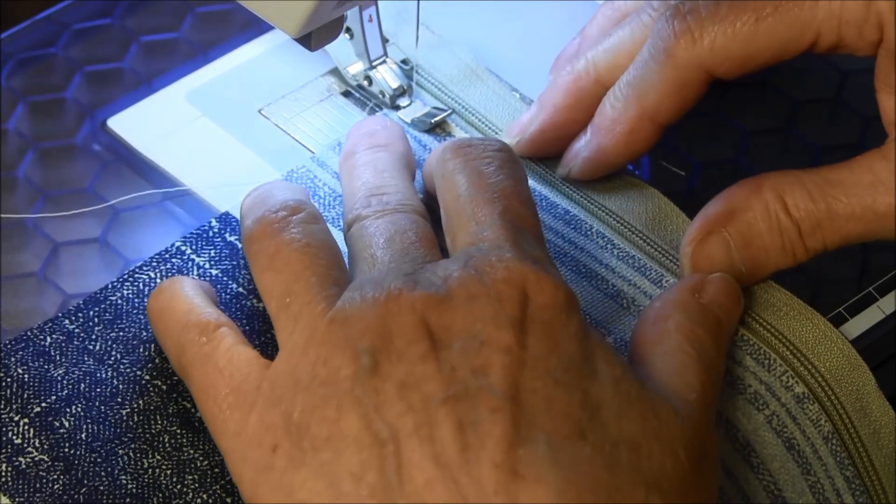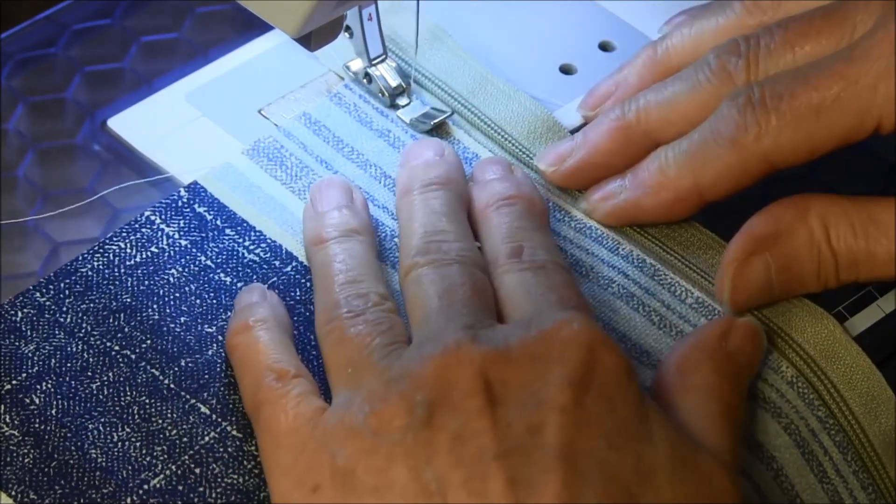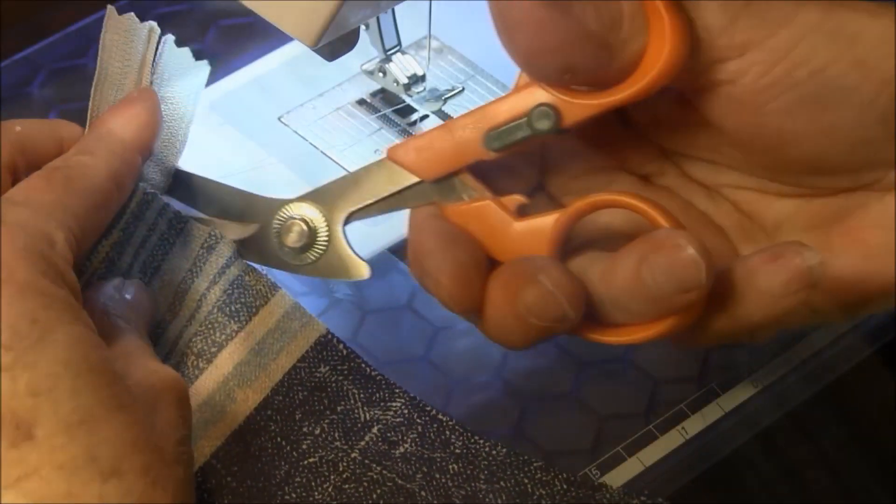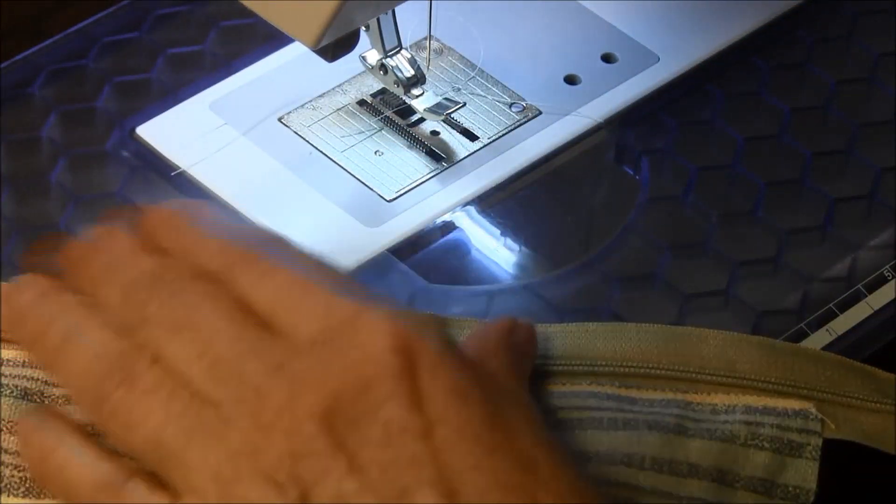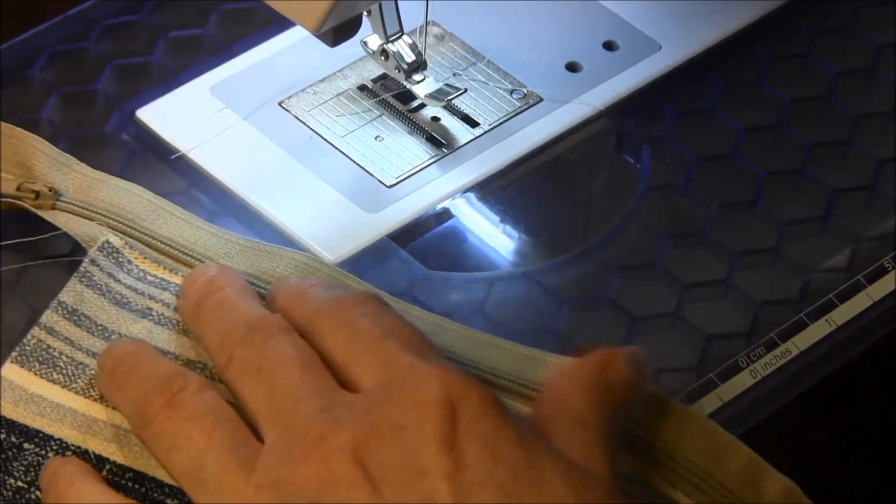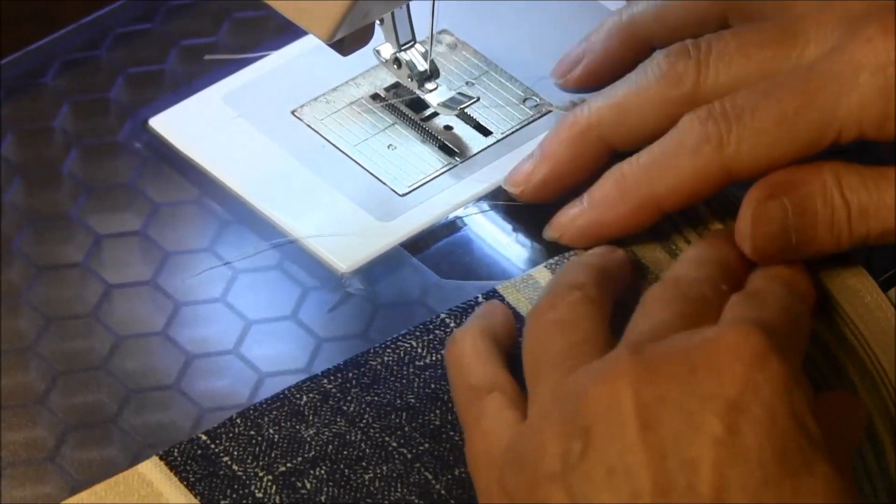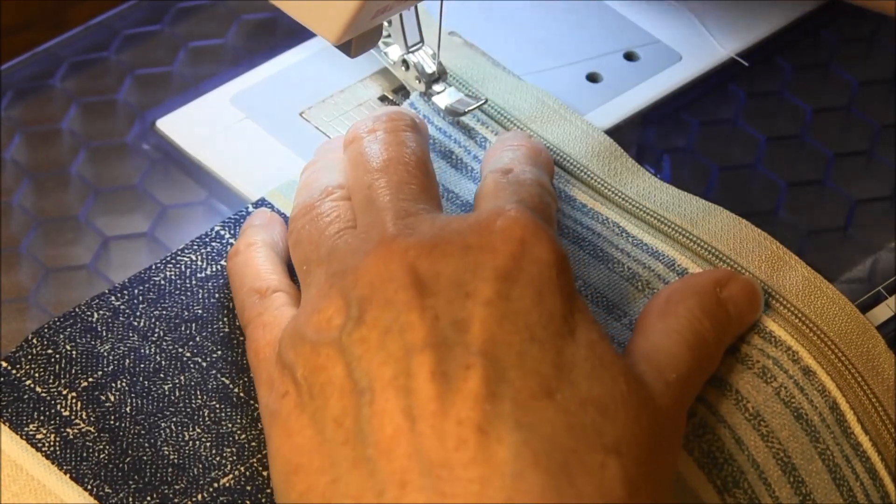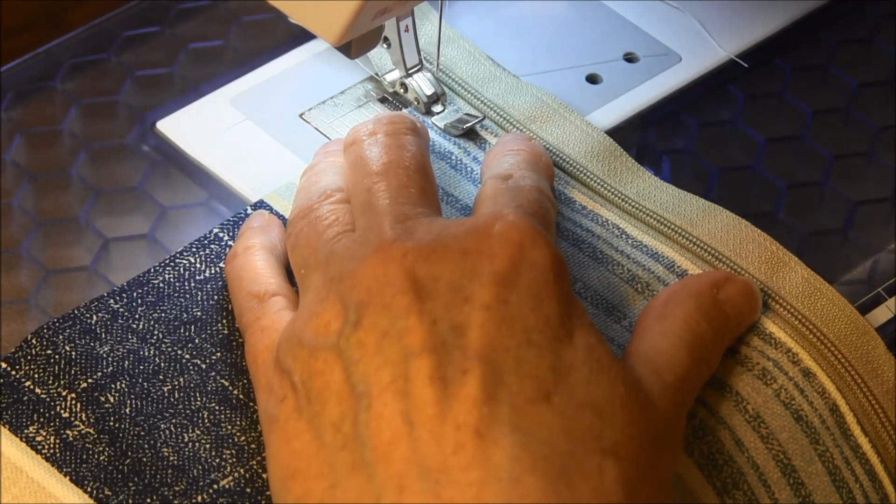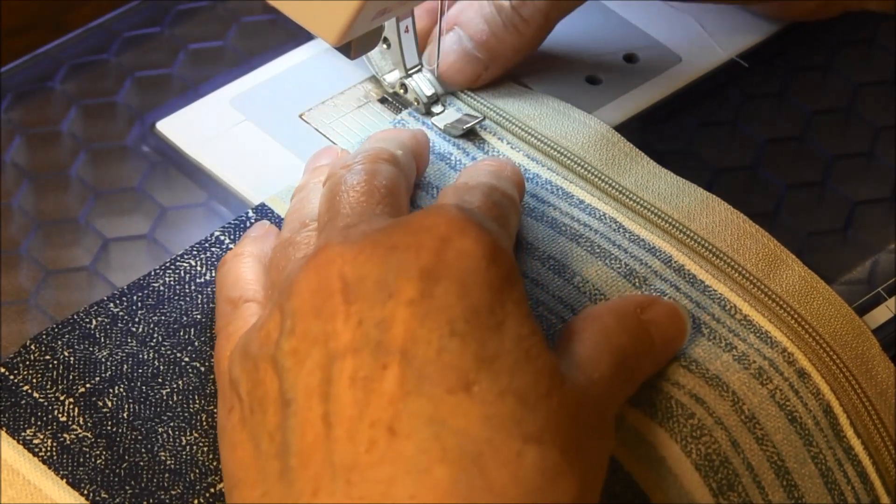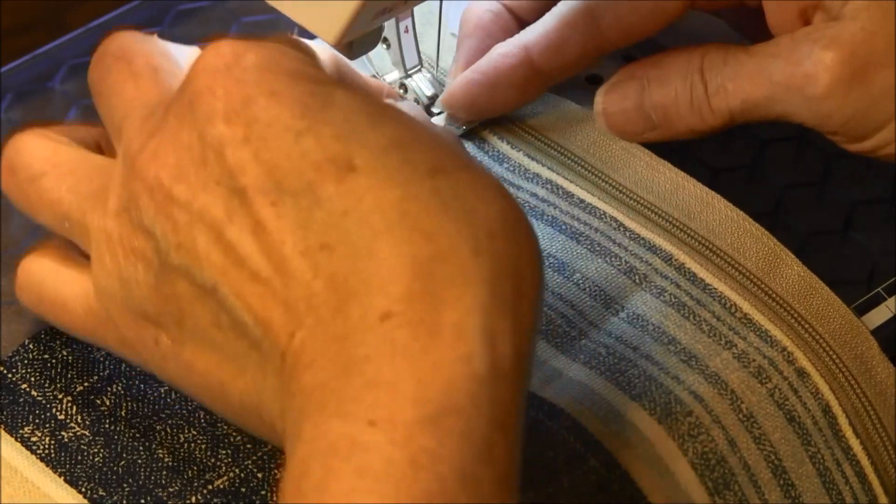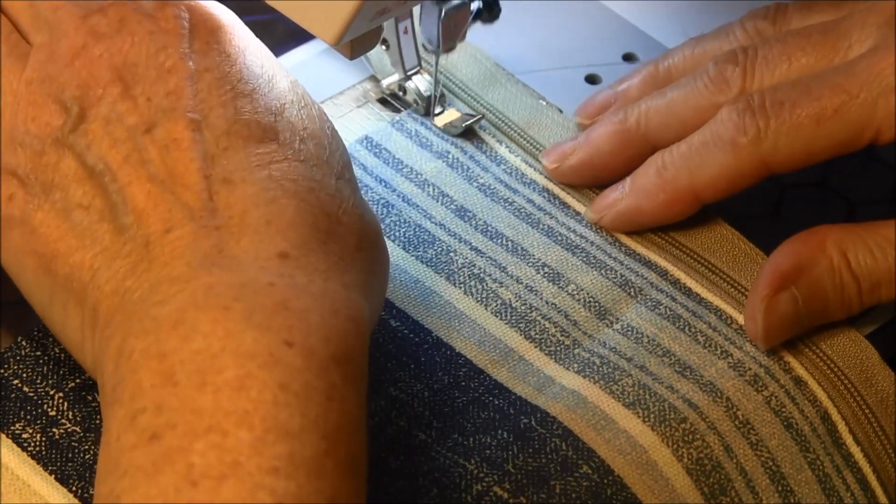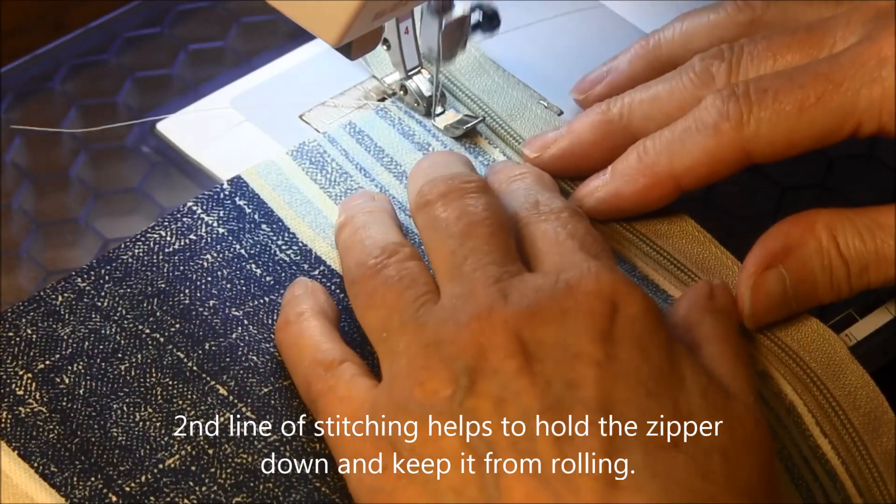And we're going to top stitch close to the fold. Now put a second row of stitches using where you sewed before as your guide and put a second row of stitches right along there again. That will help to hold the zipper down.